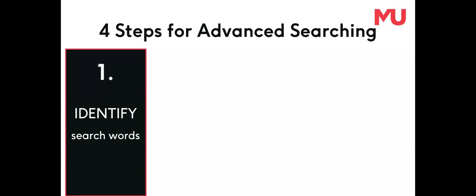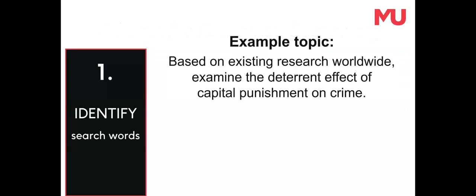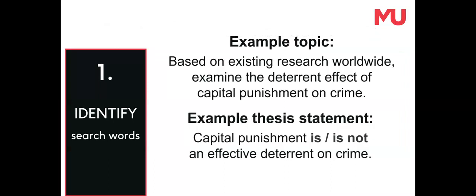Step one is to identify the keywords to use when searching. Write the research topic as a thesis statement to prove or disprove, then highlight the words to use for a literature search.